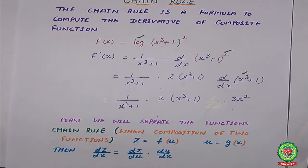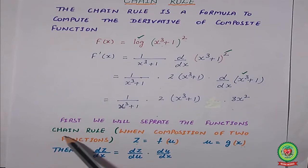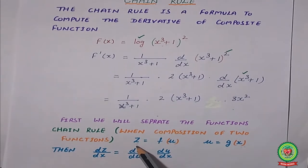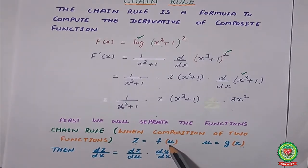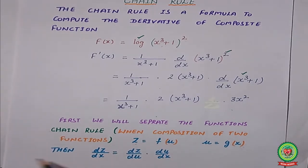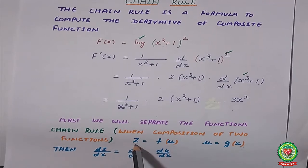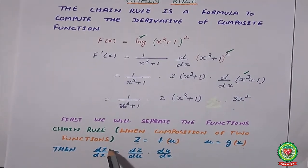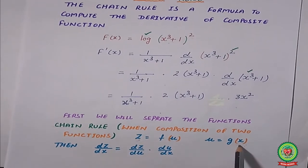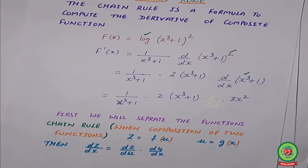What is the working rule of chain rule? First, we will separate the functions. According to chain rule, we separate the functions and give them new variable names. When we have a composition of two functions, first we separate them. Let z equal the first function and u equal the second function, so z = f(u) and u = g(x). Since z is a function of u and u is ultimately a function of x, the answer will be dz/dx. We find the two individual differentiations and then multiply them to get the answer.